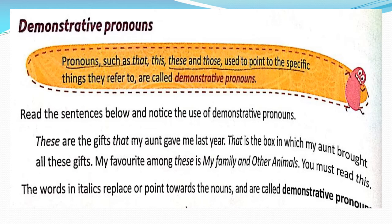What is a demonstrative pronoun? Pronouns such as that, this, these, and those — used to point to a specific thing they refer to — are called demonstrative pronouns. A demonstrative pronoun is a pronoun that is used to point to something specific within a sentence, when used to represent a thing or things. Demonstrative pronouns can be either near or far in distance or time.